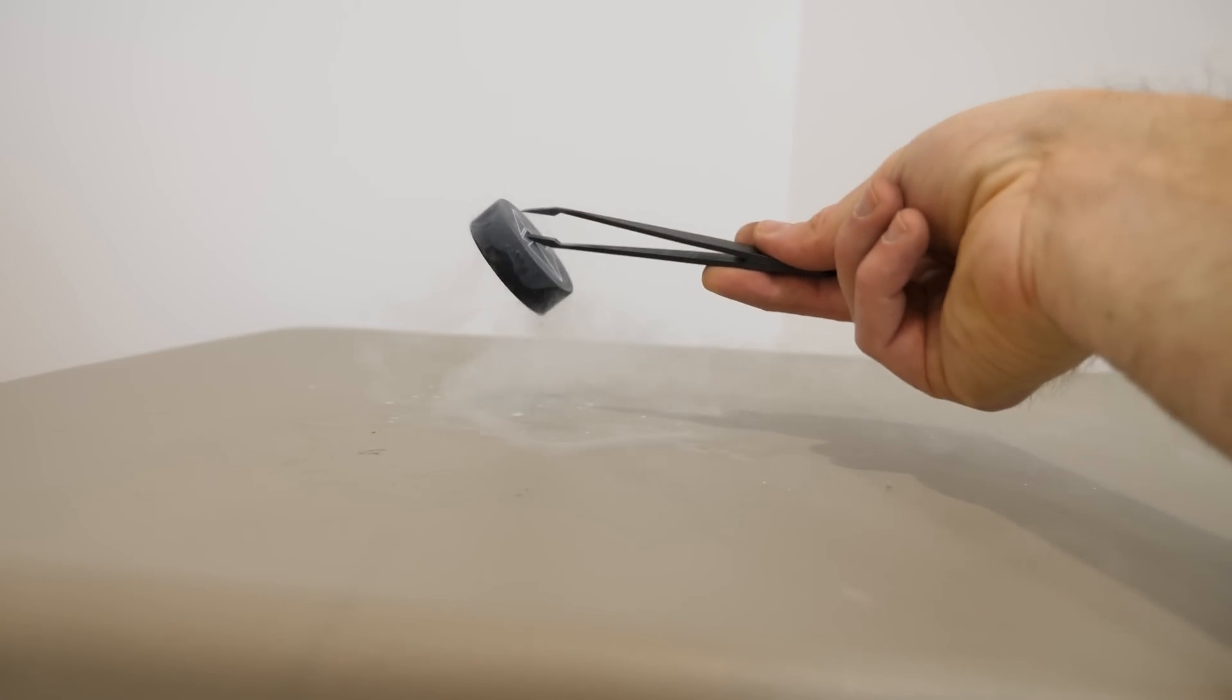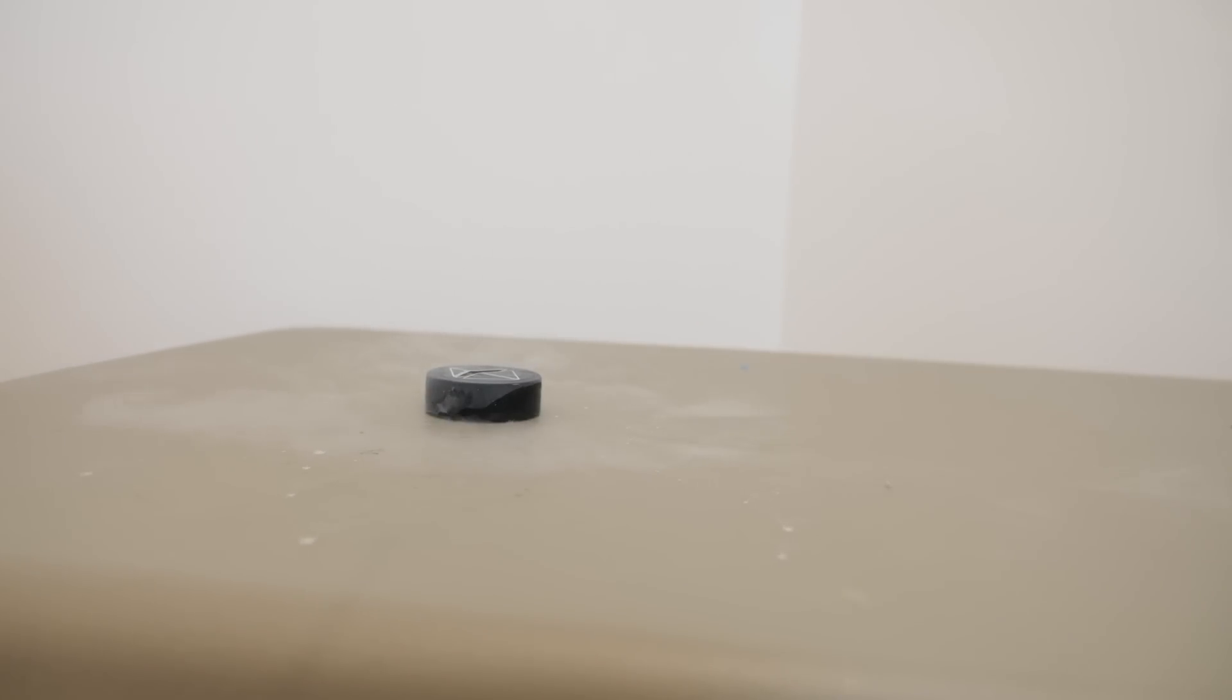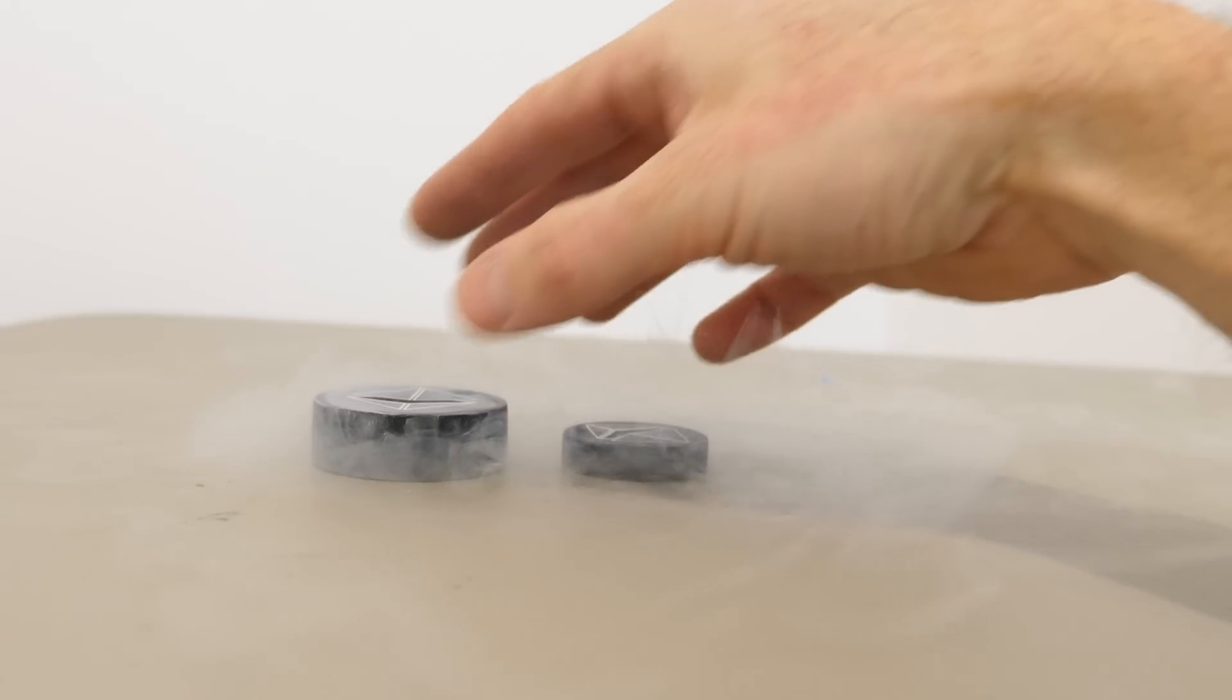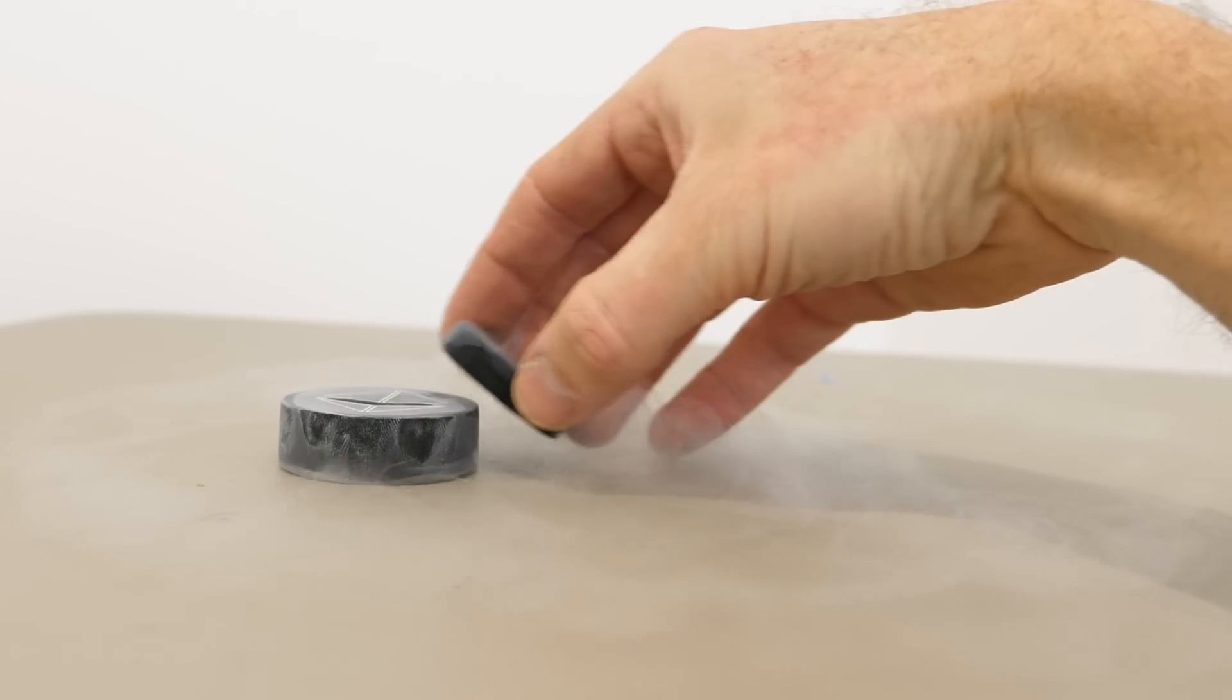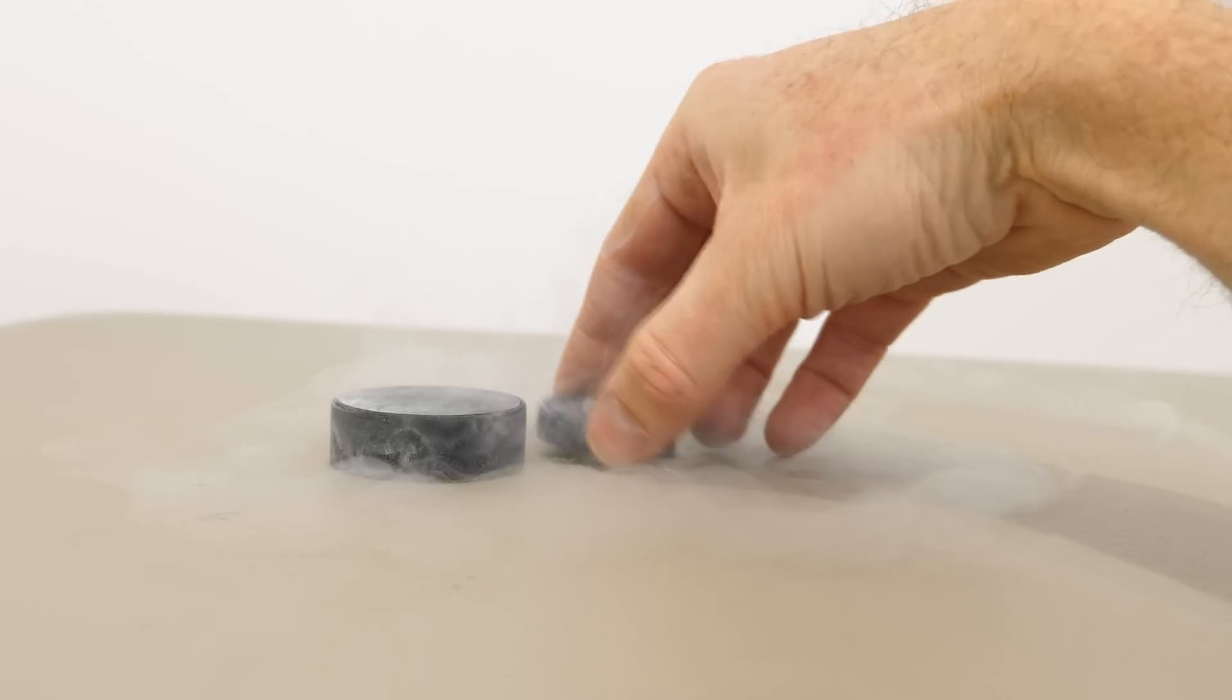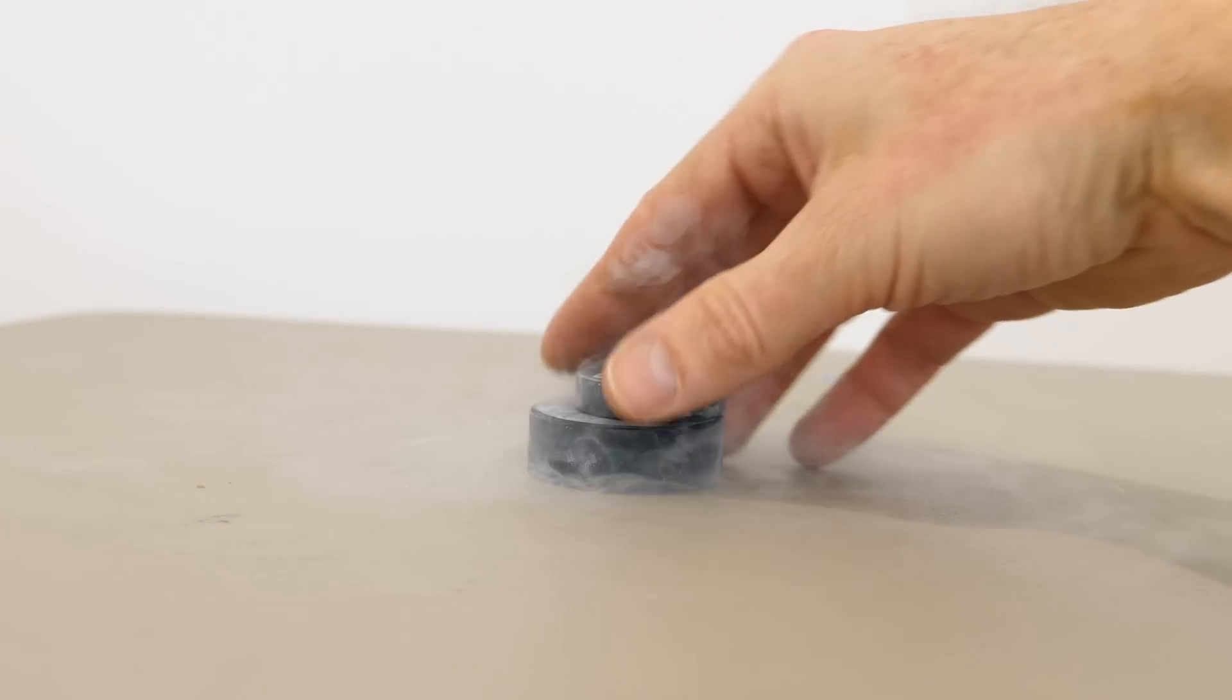So first, let's see if we just take these two superconductors and move them close to each other. You can see nothing happens. That's because neither of these by themselves are producing any magnetic flux, so they don't have any effect on each other.